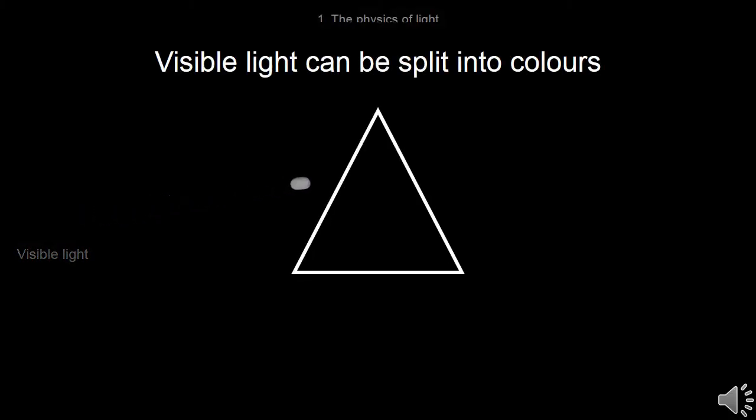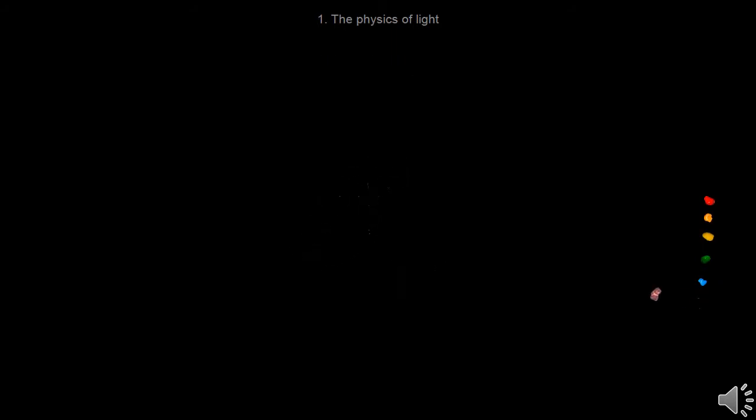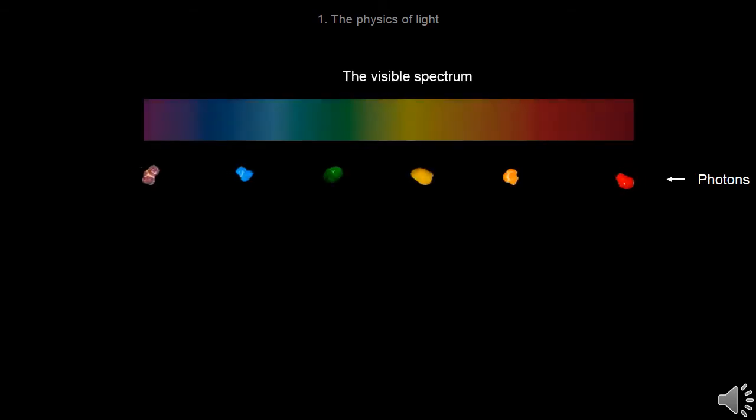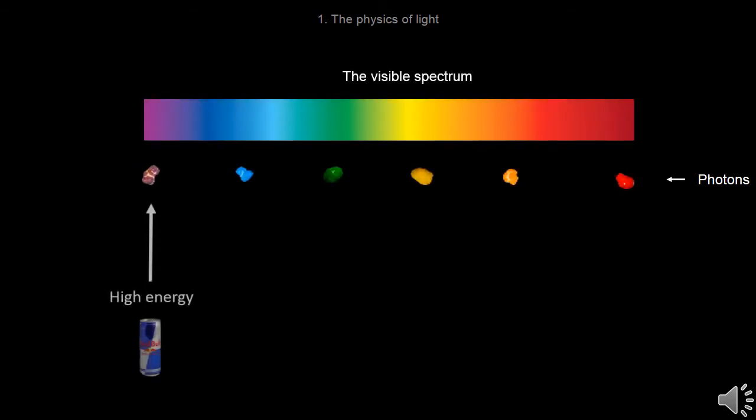Photobiology is concerned primarily with visible light. Visible light can be split into colours. Light is made up of packets of energy called photons. The visible spectrum ranges from high energy violet light to low energy red light.